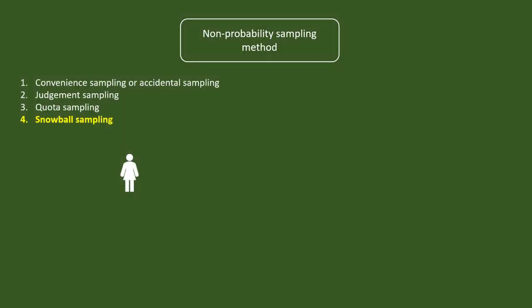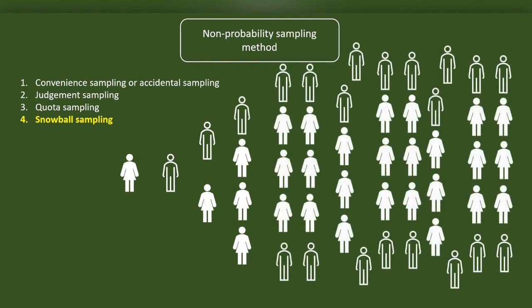Another interesting non-probability sampling method is snowball sampling. We will use this if we do not have access to potential participants. For instance, we need a sample of HIV patients. We will first approach the person whom we know as HIV positive patient. Through this person, I will find another person, and then another, and then another, and so on.